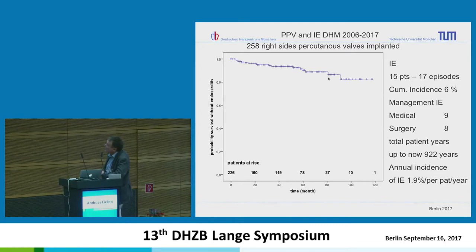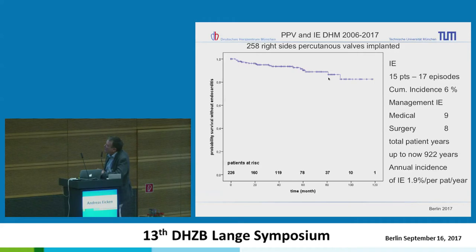We have 15 patients who had infective endocarditis in our percutaneous group, with 17 episodes, giving a cumulative incidence of endocarditis of 6%. Nine patients were managed medically; in eight patients the pulmonic valve had to be exchanged surgically. We now have 922 patient years of follow-up, and our annual incidence of infective endocarditis is 1.9% per patient year.